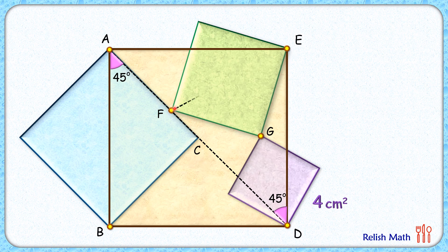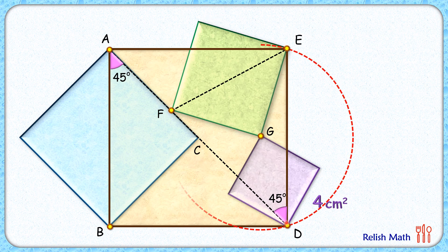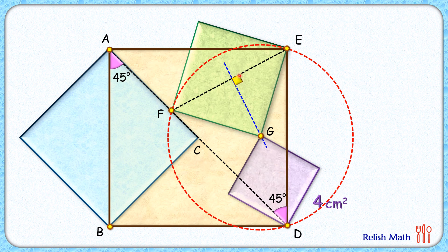Let's join FE, the diagonal of this green square whose area we have to find. For triangle FED, let's draw a circumscribed circle around this triangle. To find the center of this red circle drawn around triangle FED, we know the center lies on the perpendicular bisector of a chord. Taking FE as the chord, its perpendicular bisector will pass through the center, so the center of this red circle lies somewhere on this blue line.